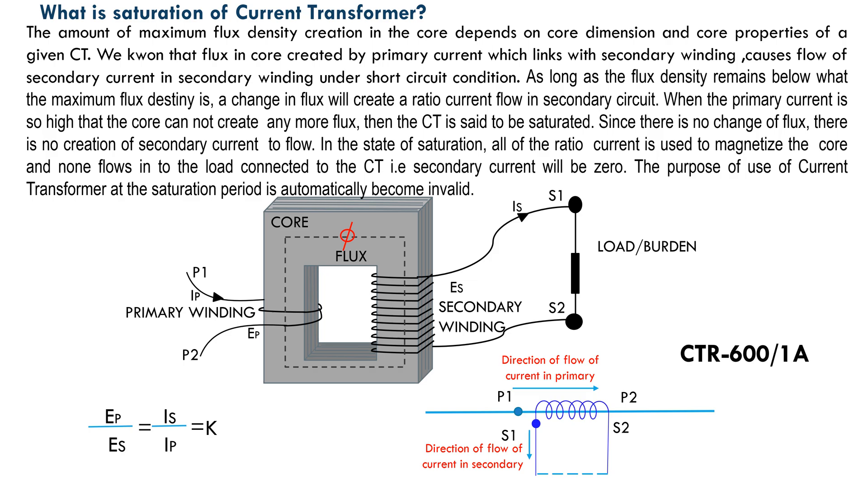Therefore, it is known from the discussion, saturation of CT occurs due to excessive flow of fault current through the primary as well as in the secondary of the CT. As a result, voltage in the secondary of the CT rises to a certain maximum value point after which increase in 10% of that voltage causes increase in secondary excitation current by 50% of the current at that point.